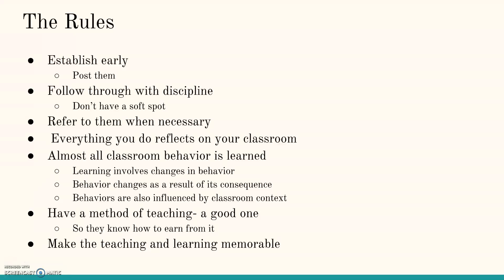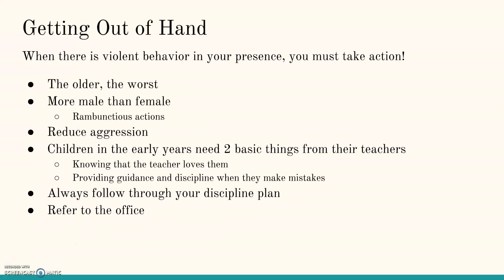Don't just give them something useless — make both the teaching and learning memorable. When violent behavior is present, you must take action. The older students get, the worse it can be, and it's more male-oriented since males tend to be more rambunctious. Try to reduce aggression. Children in the early ages need two basic things from their teachers: knowing that the teacher loves them, and providing guidance and discipline when they make mistakes. Always follow through with your discipline plan and refer to the office when needed. Keep your discipline plan posted and refer to it as much as necessary.